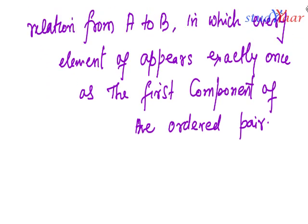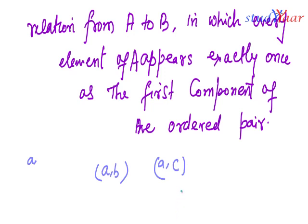For all ordered pairs, every element of A — let us suppose my element of A is small a — appears exactly once as the first component. So I should only have (a, b). I should not have (a, c) in my relation as well. If I have (a, c) in my relation then I cannot call this relation a function. If you have to define a function in terms of predicate logic, what you are going to say is: